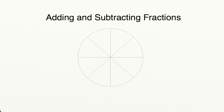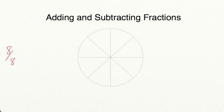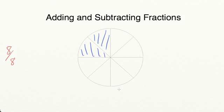When you're subtracting fractions with a common denominator, it's very similar to adding fractions with a common denominator. We have a pizza in the middle of our screen. There are eight pieces in all, so we have eight out of eight pieces. Now let's say I eat two out of the eight pieces — I eat two eighths of the pizza.